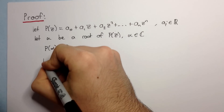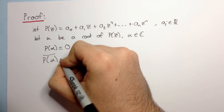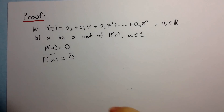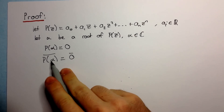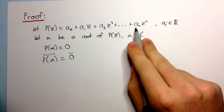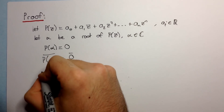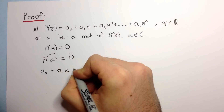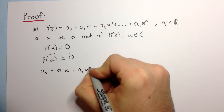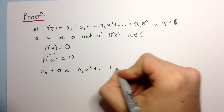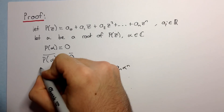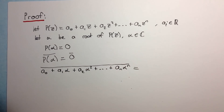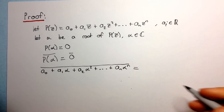We can take the conjugate of both sides and get that the conjugate of P of alpha is equal to zero bar. P of alpha is just substituting alpha into this polynomial, so we get the conjugate of A₀ plus A₁ alpha plus A₂ alpha squared plus all the way up to AN alpha to the N, and that's equal to zero conjugate. But the conjugate of zero is just zero.